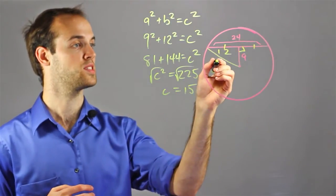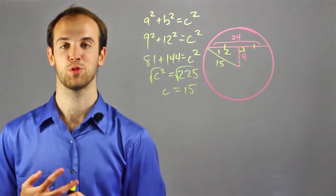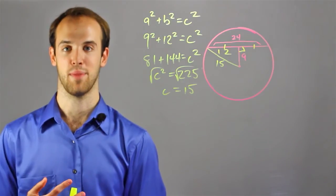So I know the radius of this circle must be 15. I'm Drew Moyer, and that was how to calculate radius given a chord and bisector.